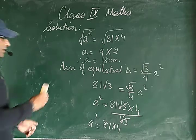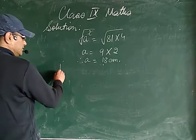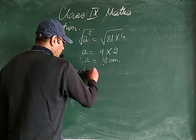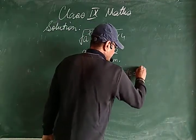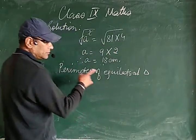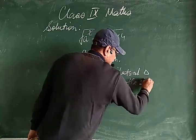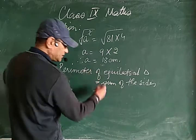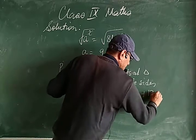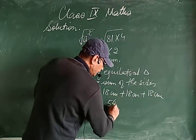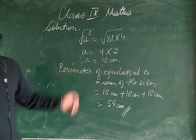We found the side of the equilateral triangle as 18 centimeters. Now we find the perimeter, which is sum of all sides. Since all three sides are equal: perimeter = 18 + 18 + 18 = 54 centimeters.